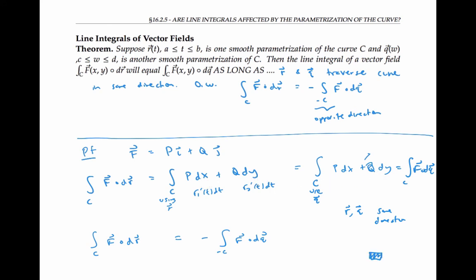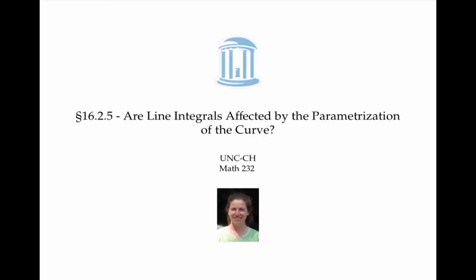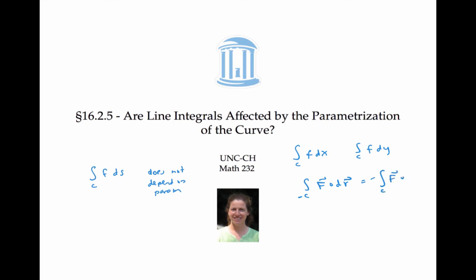That completes the proofs that line integrals don't depend on parameterization, except that parameterizations going in opposite directions introduce a negative sign. In summary: the integral with respect to arc length does not depend on parameterization at all; the integral of a function with respect to x or y, and the integral of a vector field, don't depend on parameterization either, except that parameterizing in the opposite direction gives the negative of the original integral. These facts were proved for curves in R², but the exact same proofs work for curves in R³ or any Rⁿ, and they'll come in handy when we study Green's theorem and other theorems concerning line integrals.